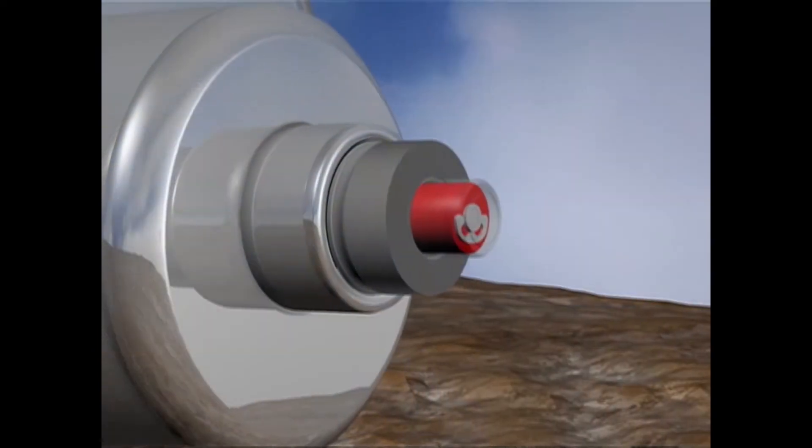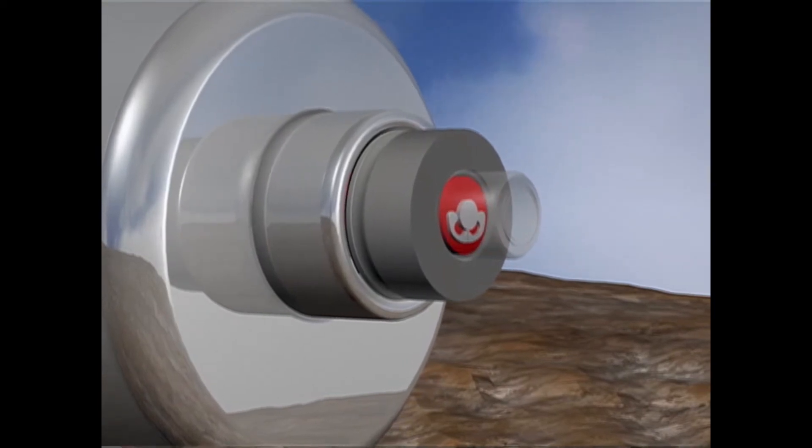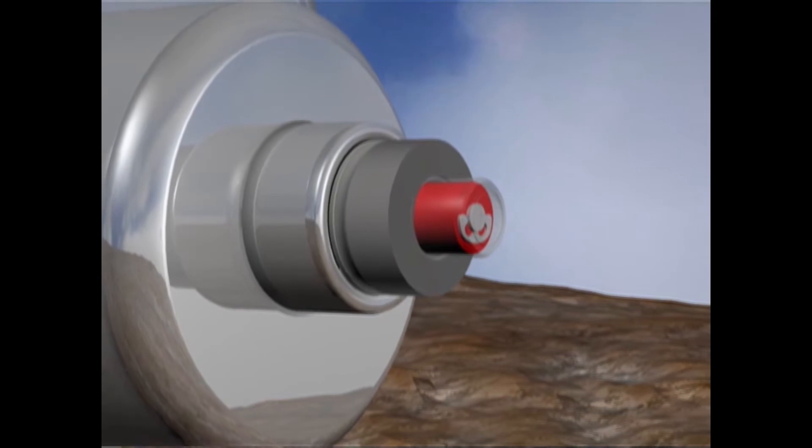While cleaning, there is a red indicator on the outside of the body that moves in and out, showing the operator that the filter is in the cleaning mode and is operating correctly.